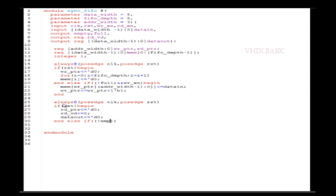When the next write enable comes, we check full again. If the FIFO is not full, we write the data into the next memory location and increment the write pointer again. This is how the write operation works in the FIFO.